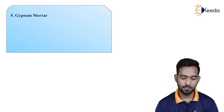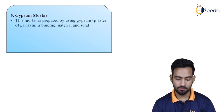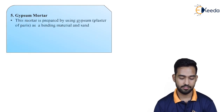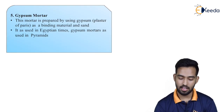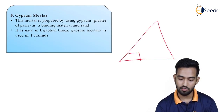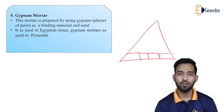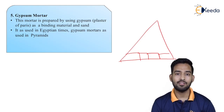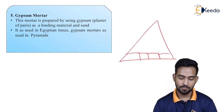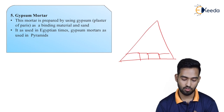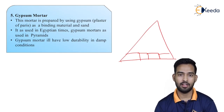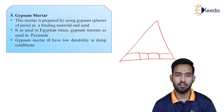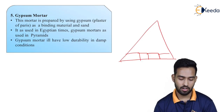Next is gypsum mortar. This mortar is prepared by using gypsum as a binding material with sand. It was used in Egyptian times — gypsum mortars were used in pyramids, to fill the gaps between stones. At that time, gypsum was available cheaply and lime and cement were not available. Gypsum mortar has low durability in damp conditions. In dry regions like Egypt it works well, but in regions like Mumbai or Maharashtra with high rainfall, gypsum mortar cannot be used.